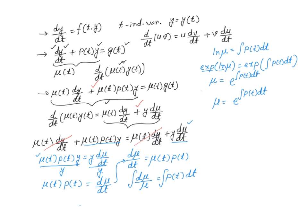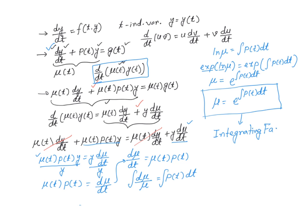If we take this function μ(t) = e^(∫p(t)dt) and multiply our equation by it, then the left-hand side becomes the derivative of the product μ·y. This function has a special name — we call it the integrating factor. Whether this method is easy to apply essentially boils down to whether you can evaluate the integral ∫p(t)dt.